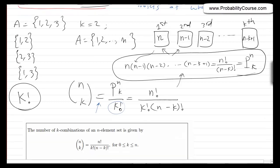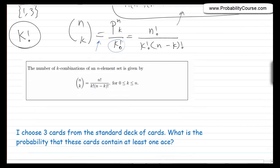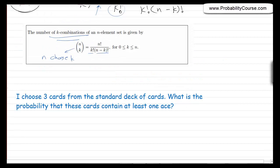So let's summarize. The number of k combinations of an n-element set is given by n choose k. A typical scenario is: you have n people and you want to choose a committee of k people. How many ways can you do that? The answer is n choose k.